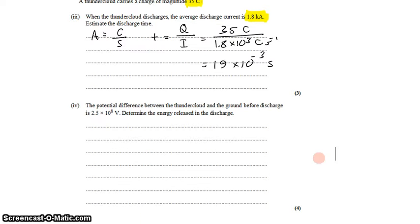Part 4 says the potential difference between the thundercloud and ground before discharge is 2.5 times 10 to the eighth volts. Determine the energy released in the discharge.